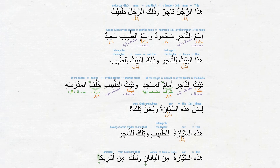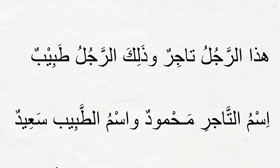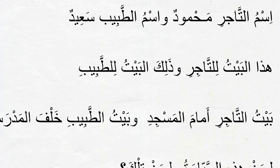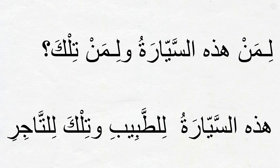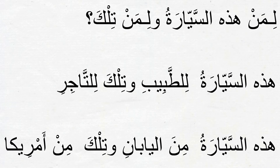That was the end of the text. Let me go back and read the whole text once again, this time with no interruptions or explanations. You try to listen and understand what I'm reading. هذا الرجل تاجر وذلك الرجل طبيب، اسم التاجر محمود واسم الطبيب سعيد، هذا البيت للتاجر وذلك البيت للطبيب، بيت التاجر أمام المسجد وبيت الطبيب خلف المدرسة، لمن هذه السيارة ولمن تلك، هذه السيارة للطبيب وذلك للتاجر، هذه السيارة من اليابان وذلك من أمريكا.